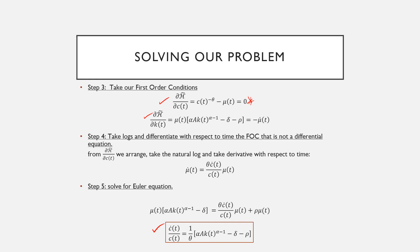So this is how we use the current value Hamiltonian — it really depends on the problem you're looking at. What I want you to take away from this exercise is that we can get the same results from the current value Hamiltonian as we can from the present value Hamiltonian. It's just that sometimes it's easier to use one over the other, and we should be fluent in both methods. I hope this video helps. Take care.